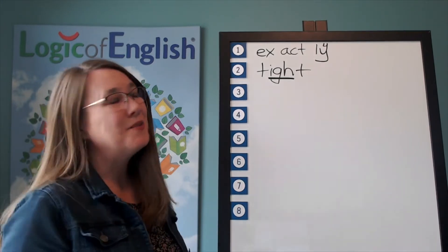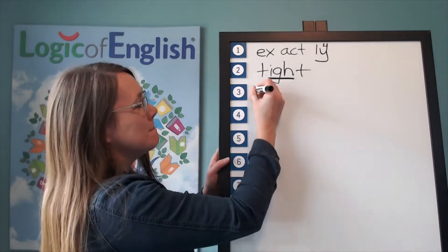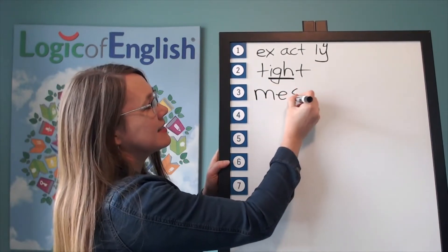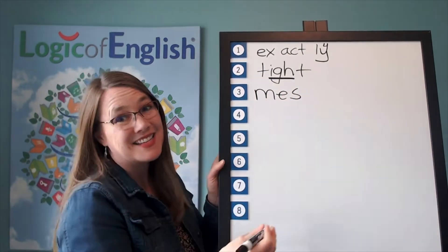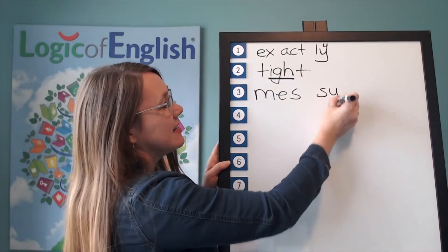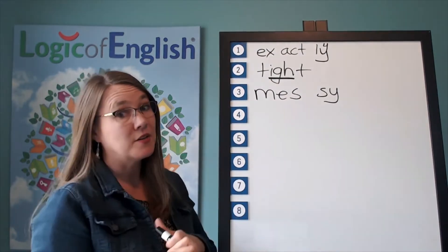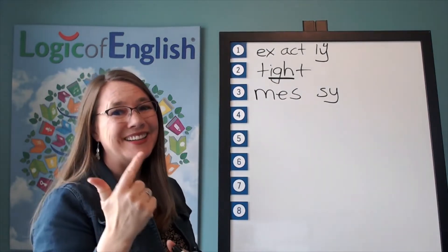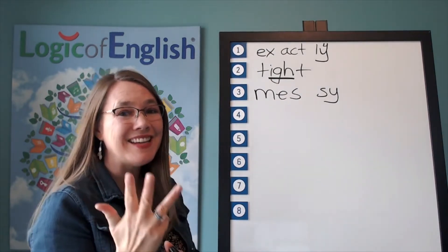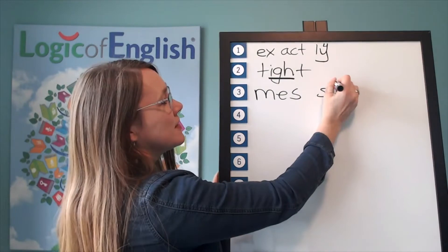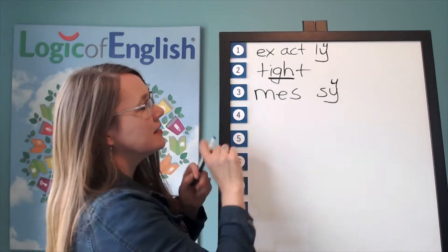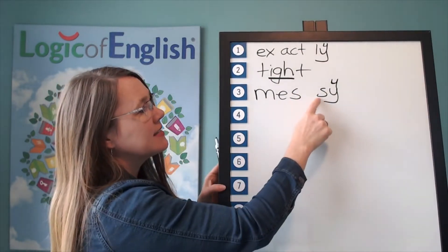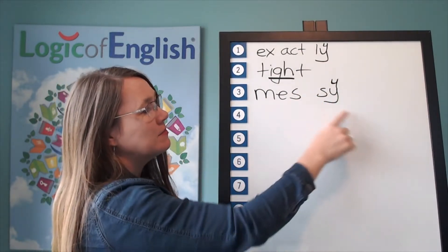Go ahead and write mess-see. Good. And help me to write it. M-E-S. And the second syllable is see. S-E. How do we mark it? That's right. Y-I-E is saying its fourth sound. Let's read it. M-E-S-S-E. Messy.